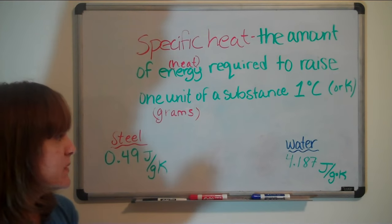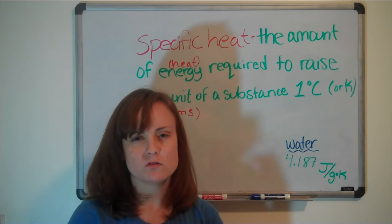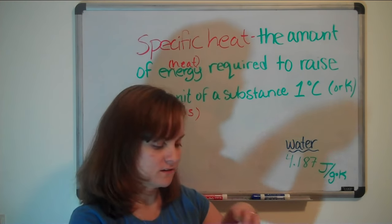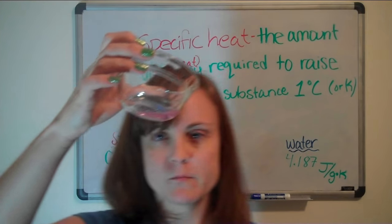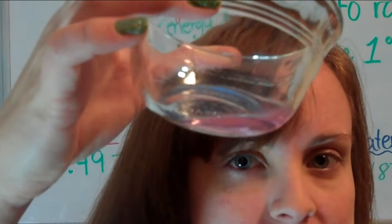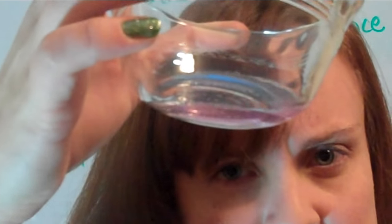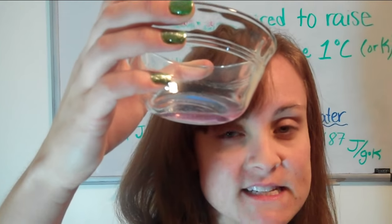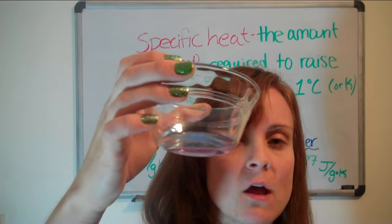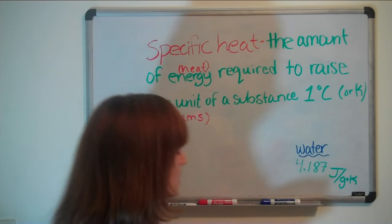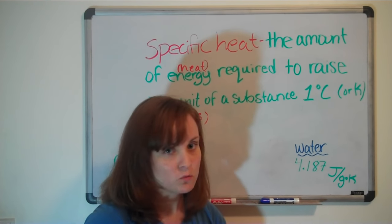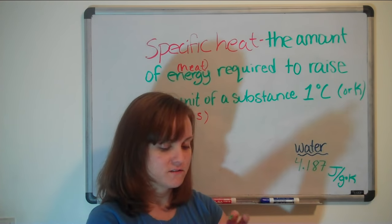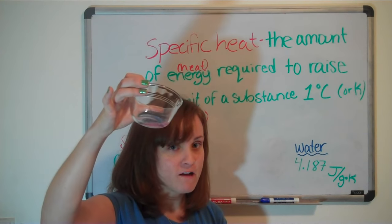Water has the capacity to absorb that much heat because of the way water molecules interact with each other. This is 5 grams of water. Water is typically measured in science in milliliters or liters. Note that grams and milliliters are equal because the density of water is 1 gram per milliliter, so this is 5 grams, but it's also 5 milliliters.